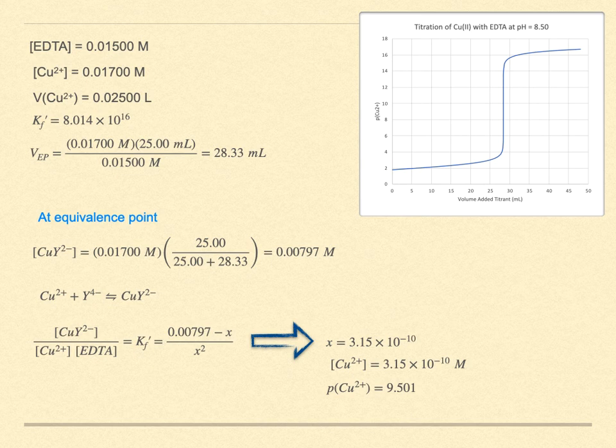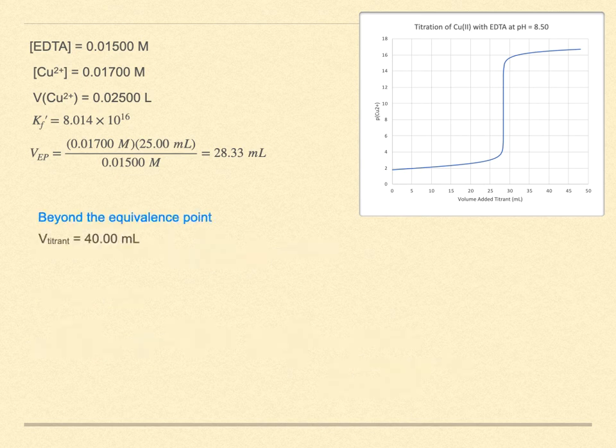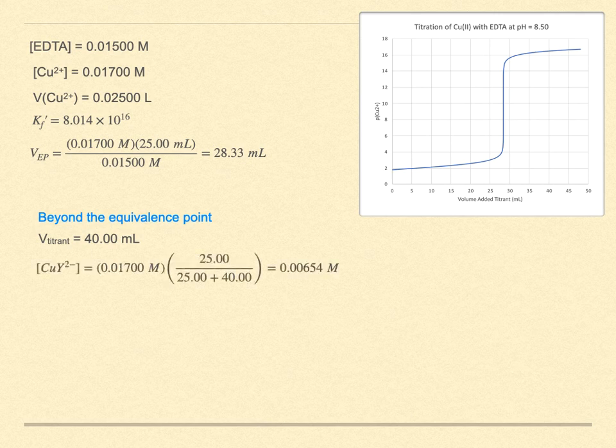So what about beyond the equivalence point? Let's choose to consider the titration at titrant volume of 40 milliliters. The main reaction participants are now the complex ion and the excess EDTA. The coordination complex is just the original metal ion concentration diluted to the new total volume. At this volume of added titrant, the complex ion concentration is 0.00654 molar.